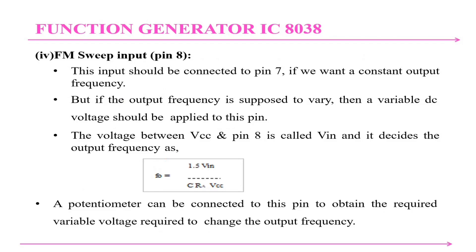The FM sweep input should be connected to pin 8. If a constant output frequency is needed, pin 7 is tied to pin 8. If the output frequency is to vary, a variable DC voltage should be applied to pin 8. The voltage between VCC and pin 8 is called Vin and it decides the output frequency as F0 = 1.5 × Vin / (C × Ra × VCC). A potentiometer can be connected to this pin to obtain the required variable voltage and change the output frequency.